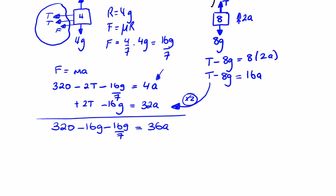So a is equal to 140.8 divided by 36. That's going to give us 3.91 meters per second squared.